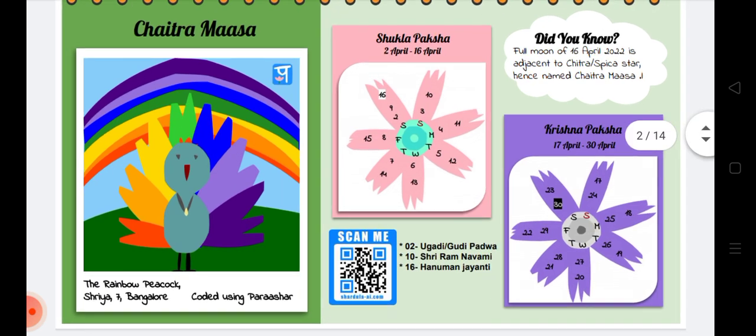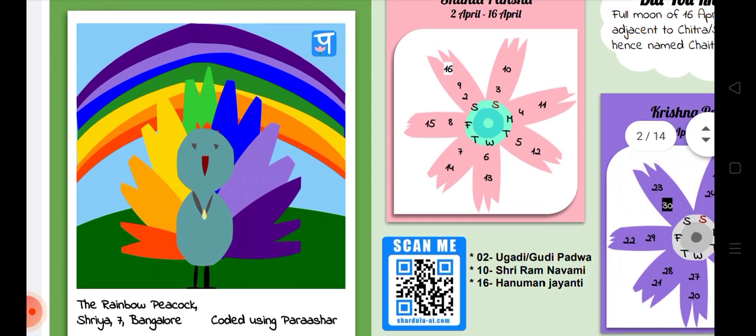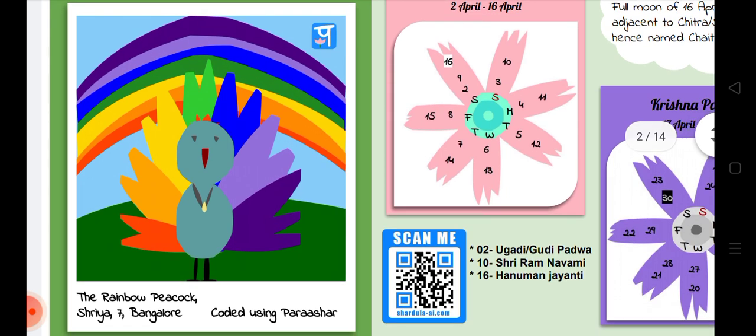What you see here is a rainbow peacock. This was created by Shriya when she was 7 years old. She is from Bangalore, and this is her imagination of a rainbow peacock which she first created on paper and then coded it in Sanskrit using the Parashar coding environment, and the computer generated this picture.